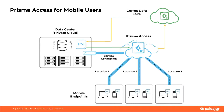Prisma Access for mobile users also provides an alternative to the traditional on-premises deployment of remote access VPNs. Instead of managing multiple solutions at various locations, you can manage it as part of a unified service in a single pane of glass. We have more than 100 locations available to choose from, including regions like Africa, Asia, Australia, New Zealand, Europe, Japan, Middle East, North America, Central America, and South America. For areas without cloud presence, you can use a hybrid approach combining Prisma Access with on-premises firewalls running GlobalProtect gateways.